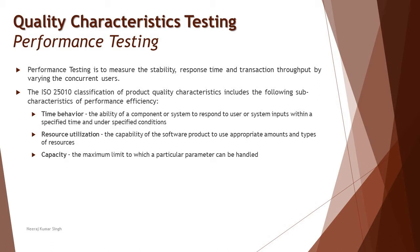By varying the number of concurrent users — meaning simultaneous users working on an application — we can observe side effects on performance. The number of people using the system at the same time has a significant impact; the most important factor is response time. It is not the same when 10 people are working on your system versus 100 or 100,000. The business will define the environment, number of users, and expected performance criteria.